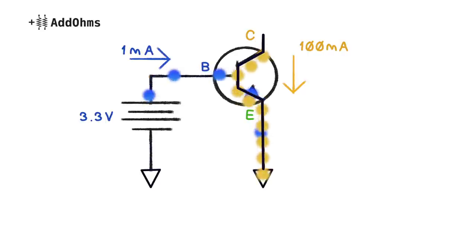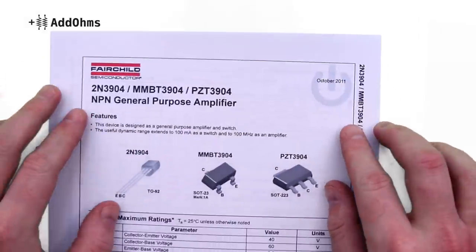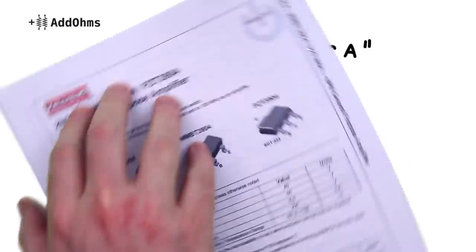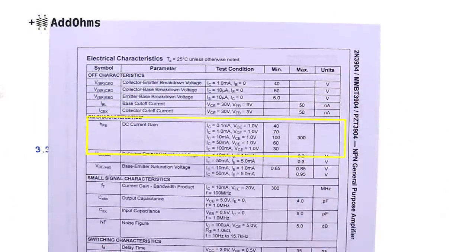The relationship between these two currents is known as the beta of the transistor. If we take a look at an example datasheet, like this one for the 3904, we'll see that the beta, stated here as HFE, is about 100. You'll also notice the beta varies under different conditions, meaning it should be treated more as a guideline and not a rule.